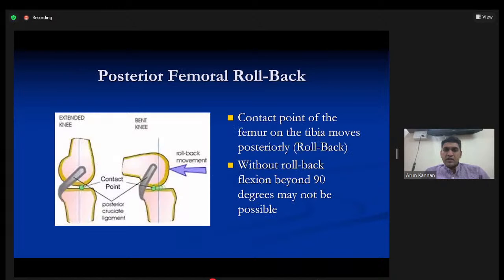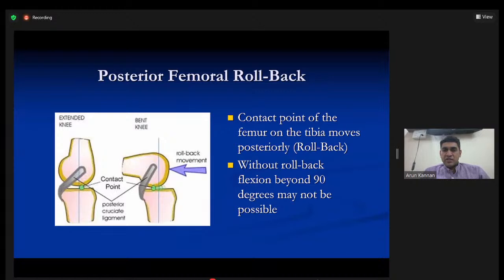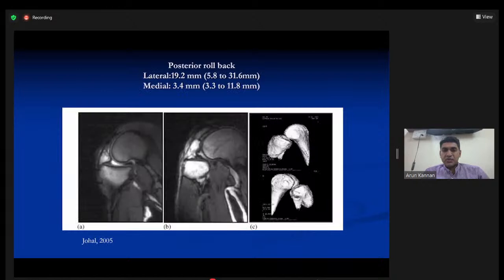This largely depends on the concept of posterior femoral rollback. In a normal extended knee the contact point between the femur and tibia is quite anterior, and as we flex the knee the contact point moves posteriorly — this is called the posterior rollback of the femur. When this rollback does not happen, flexion becomes limited. This concept is crucial to understanding the difference between a CR and PS knee.